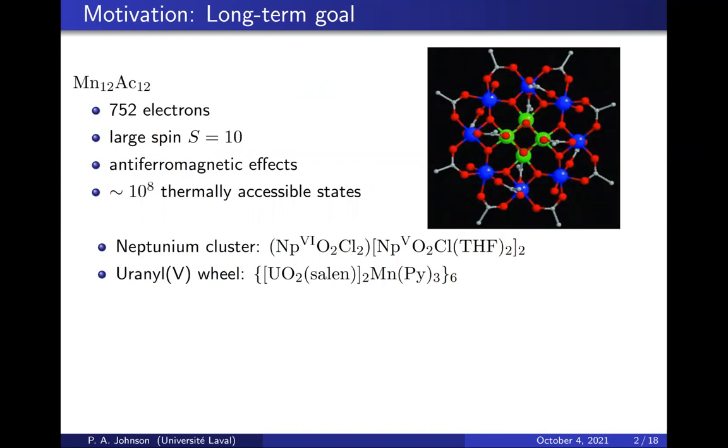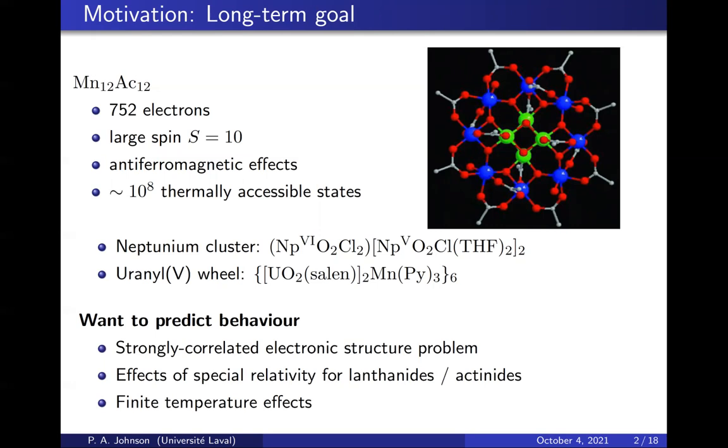But that's just one example. There are many more complicated examples involving heavier elements, including uranium and neptunium. To predict behavior, we will need to be able to solve a very difficult electronic structure problem. We will need to account for effects of special relativity due to the heavier atoms, and we will need to do all this at a finite temperature to observe finite temperature transitions.